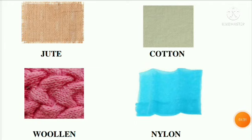There are four types of fabric: jute, cotton, woolen, and nylon. You have to paste the pieces of fabric — you do not need to draw pictures. Just paste the fabric pieces and write the name under each one.